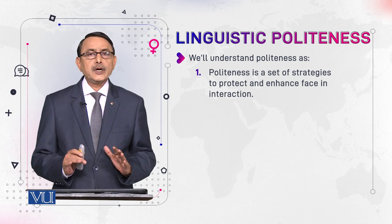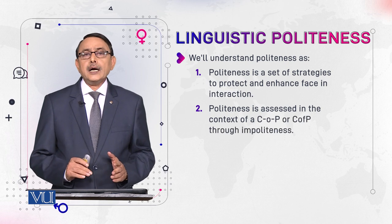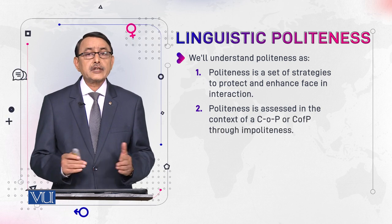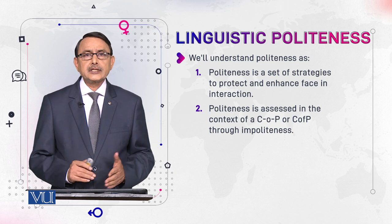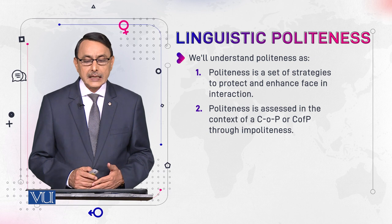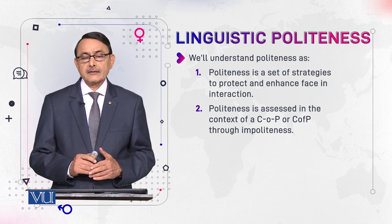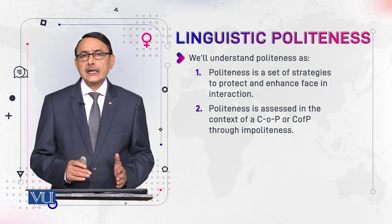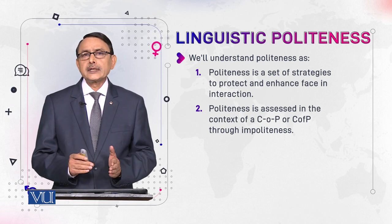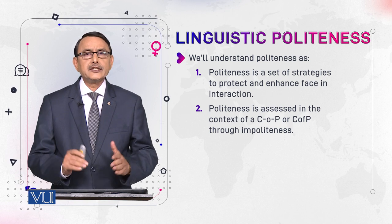This is one part of its definition. The second point is: how is politeness assessed? How can we say that a person is polite or impolite? This assessment is made in the context of a community of practice — it would be decided according to the context of your social group whether you are polite or not.